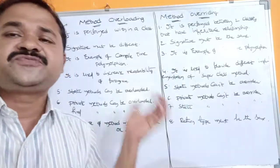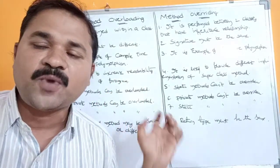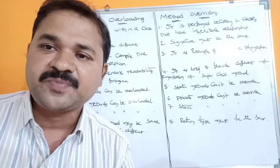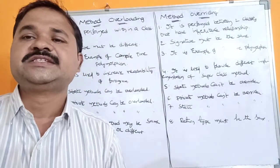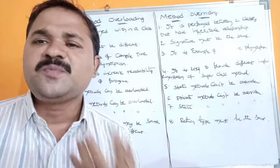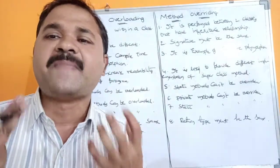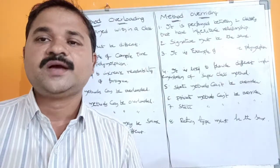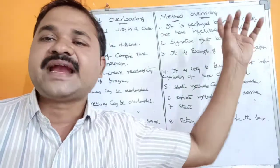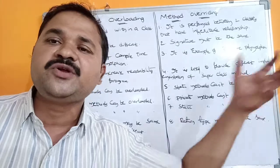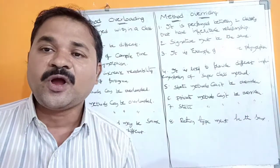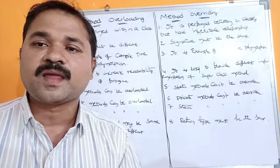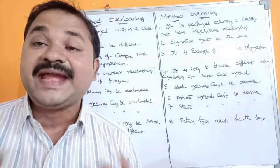Compile-time polymorphism can also be known as static polymorphism, static binding, or early binding. Runtime polymorphism can also be known as dynamic polymorphism, dynamic binding, or late binding.